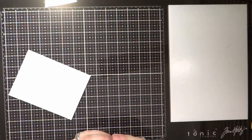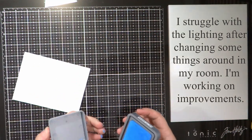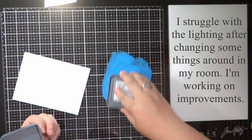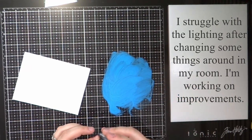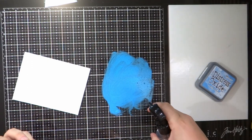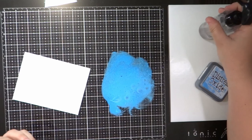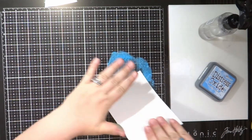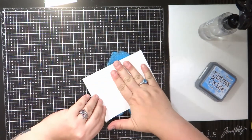So the first thing I'm going to do is smear some Distress Oxide ink in Salty Ocean onto my glass media mat and this is going to be a faux watercolor background. I'm just using Distress Oxide though for it because it's quick and easy.